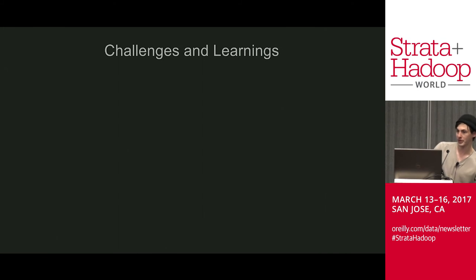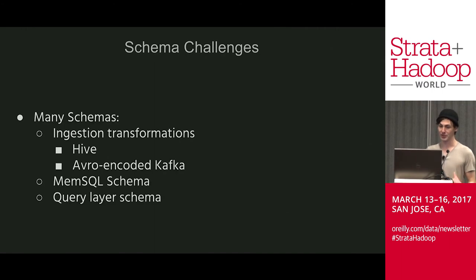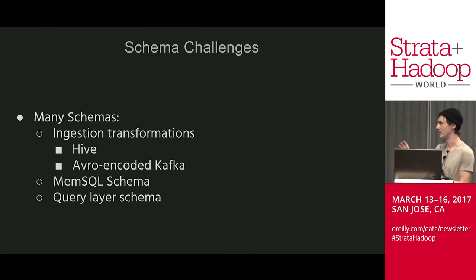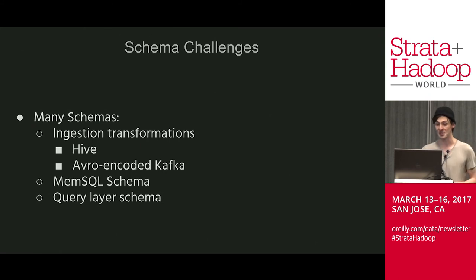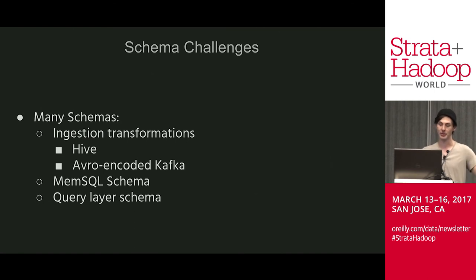We had a lot of challenges around schema because we're managing about five different schemas: the Hive schema, transformations on top of that, the Avro-encoded Kafka schema, transformations on top of that, the MemSQL schema as a SQL DDL statement, and the query layer schema containing semantic metadata used for rejecting queries. What we ended up doing was generating one meta schema file and then generating all separate schemas from that — so we only have to edit one place and all changes propagate across all schema representations.